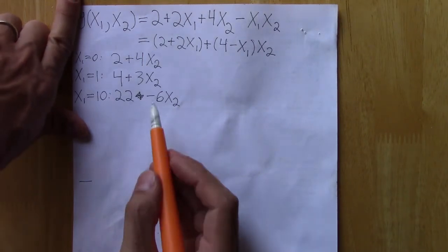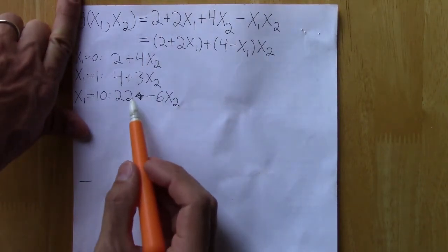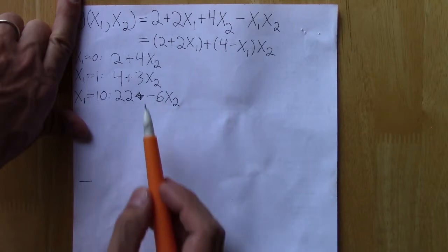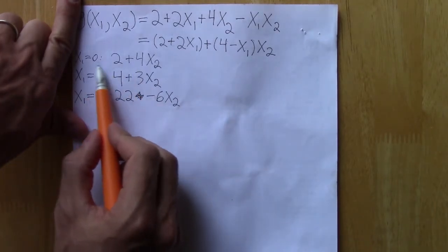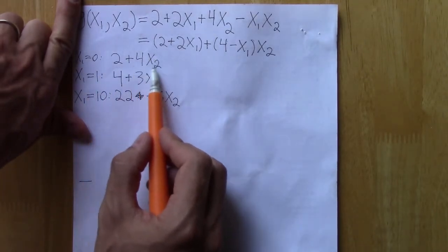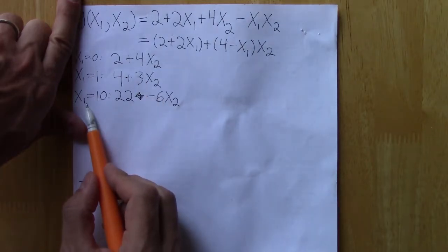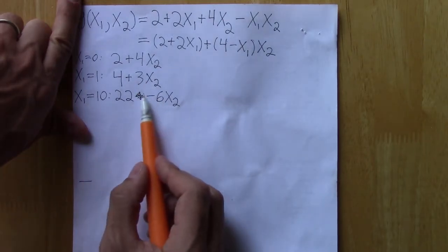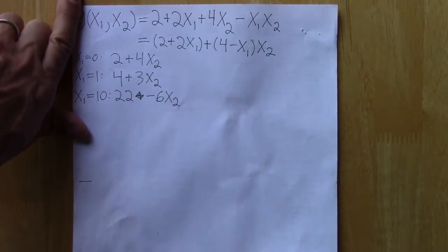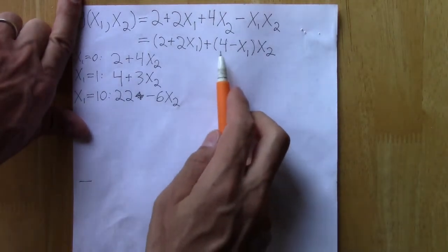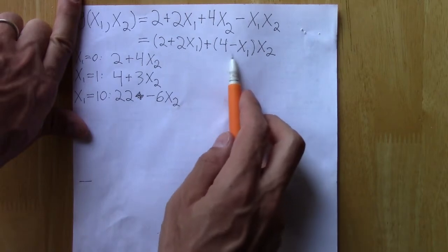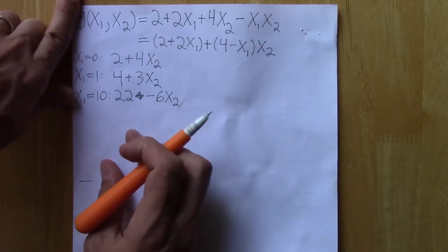You could also think about, if we notice here, as emphasized by my error, initially for values closer to zero we were getting a positive slope. And then for this larger x₁, we got a negative slope. You could think about when is that value of x₁ that gives zero slope. In this case, that would be x₁ equal to 4.